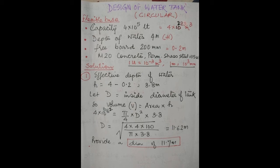The capacity is 4 × 10⁵ litres, which multiplied by 10⁻³ gives 400 m³. Depth of water H = 4 m, freeboard = 200 mm = 0.2 m. With these conversions done, we can start the problem solution.